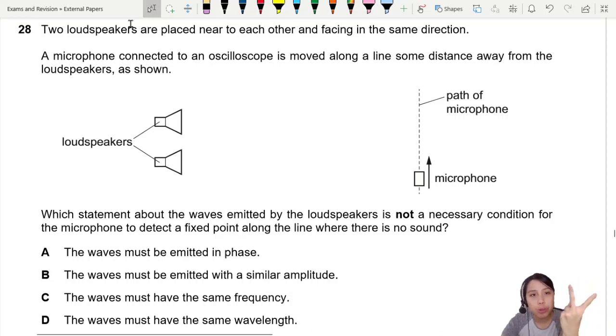Here's a setup with two loudspeakers facing the same direction. You play a sound and bring a microphone connected to an oscilloscope, moving it along a line some distance away. This is the interference experiment, which you can try if you have a loudspeaker and a microphone.